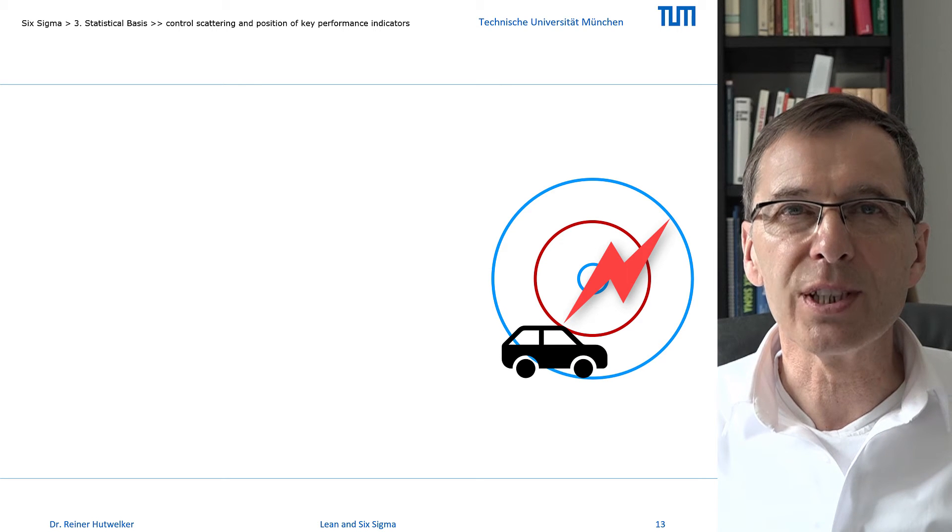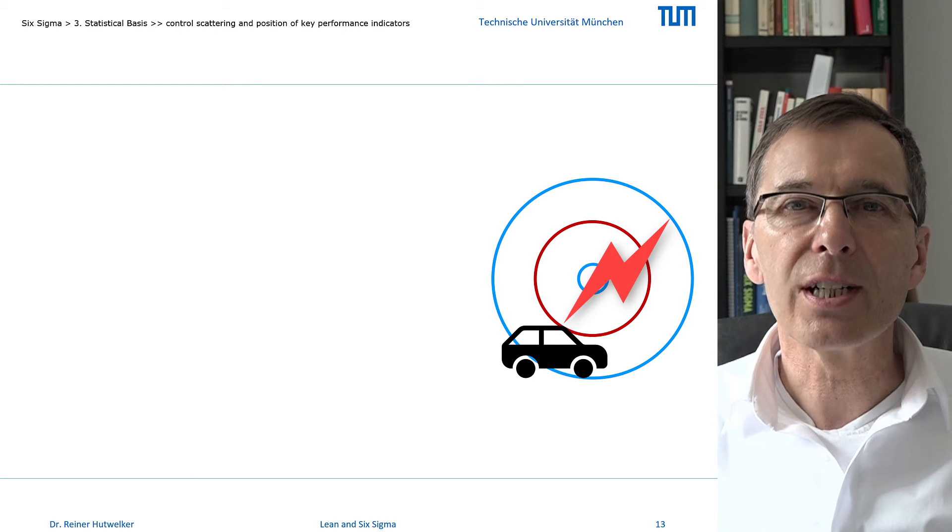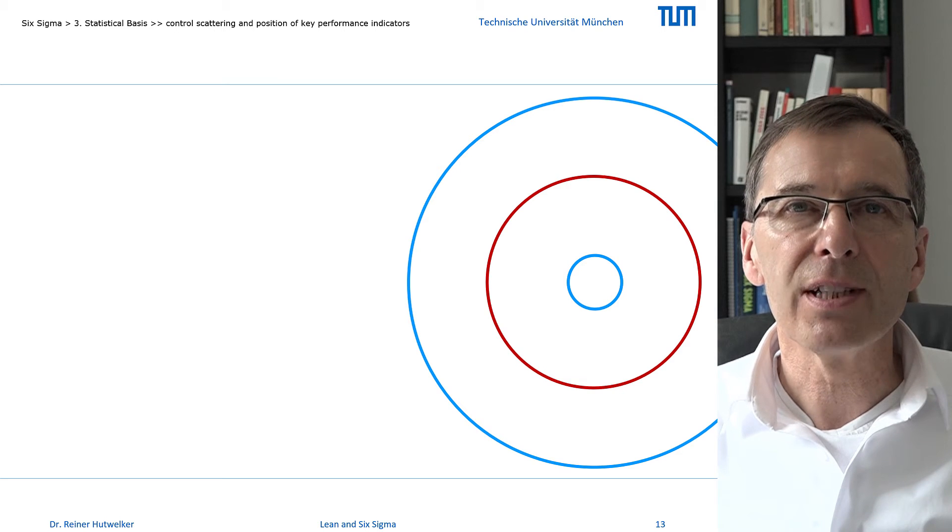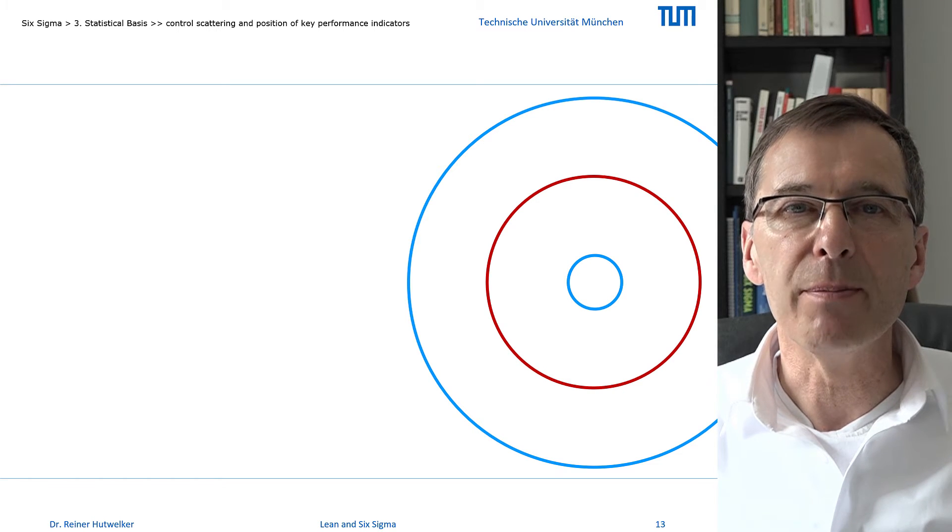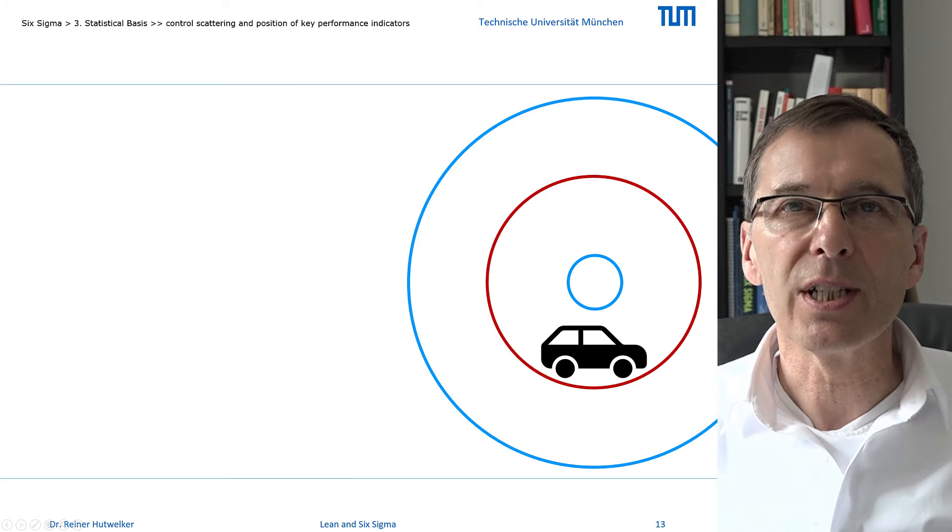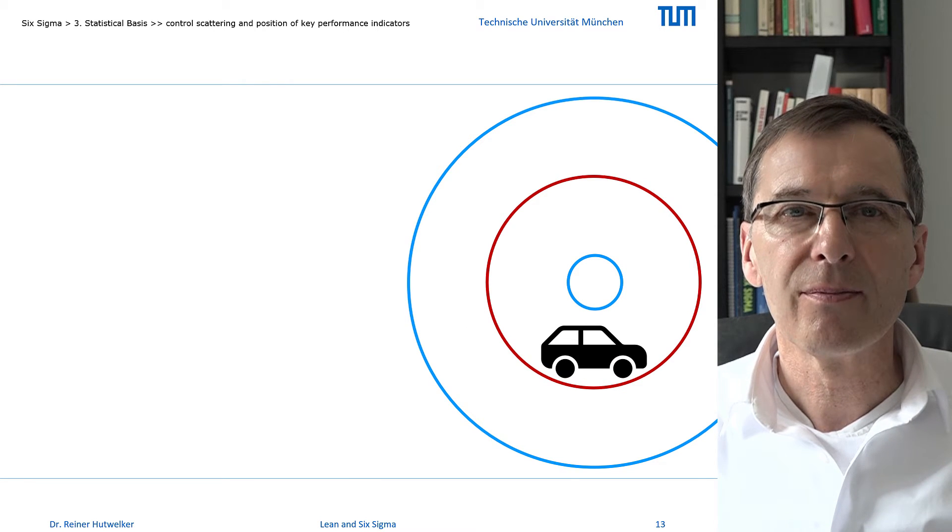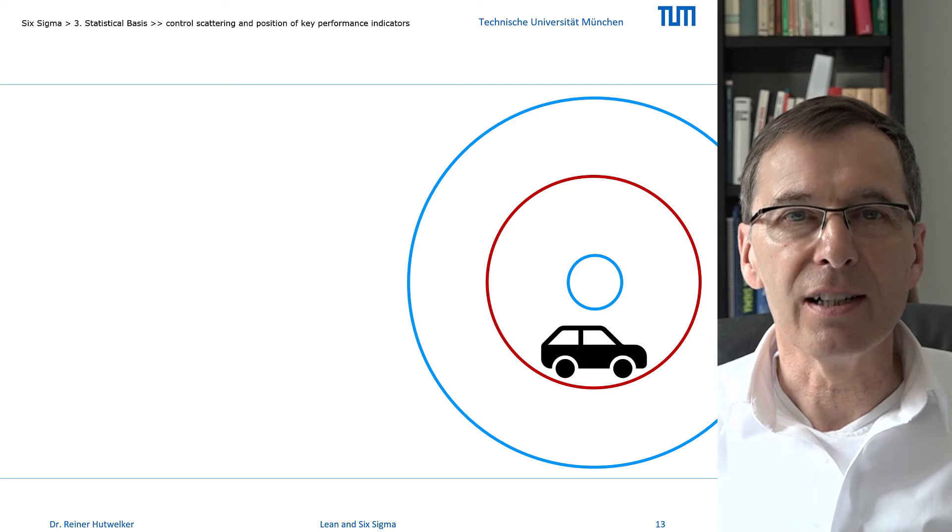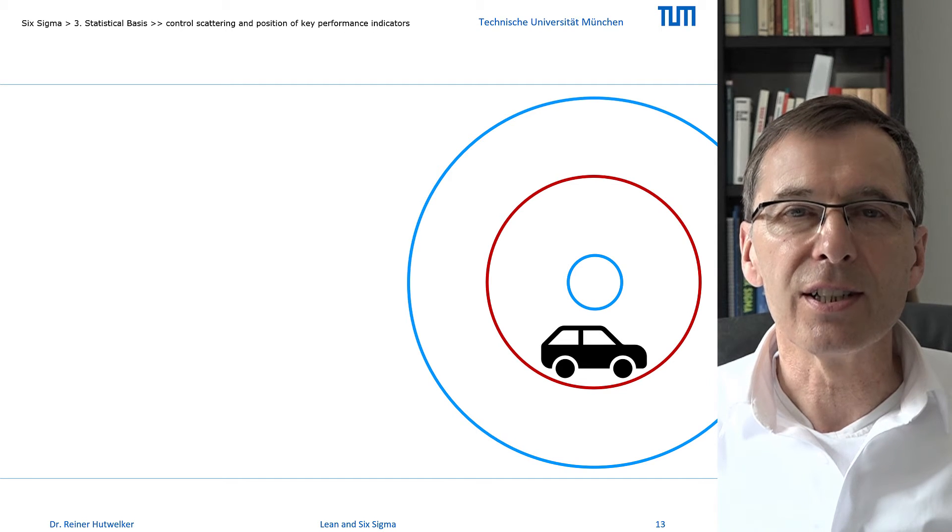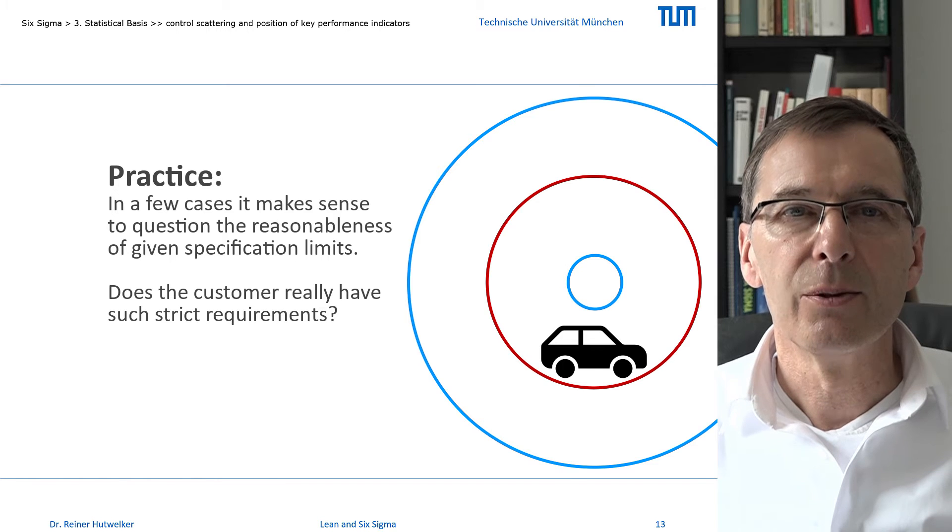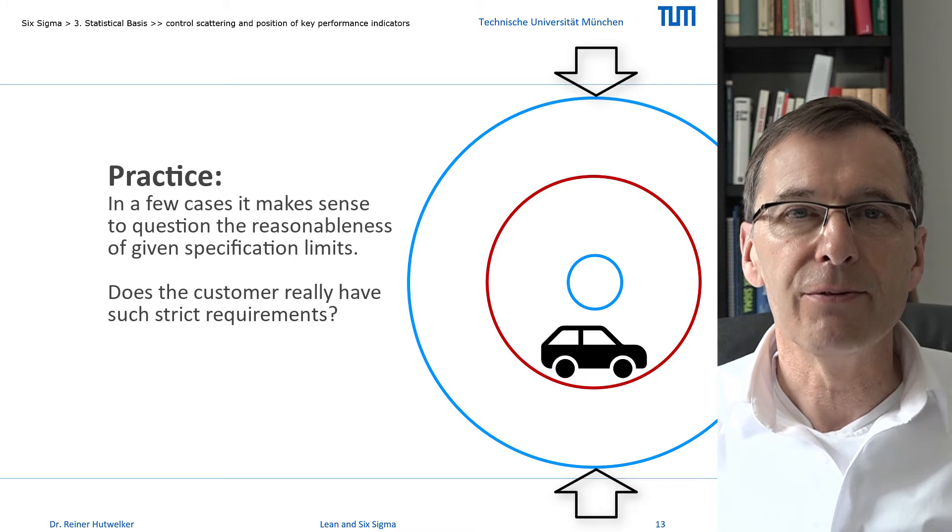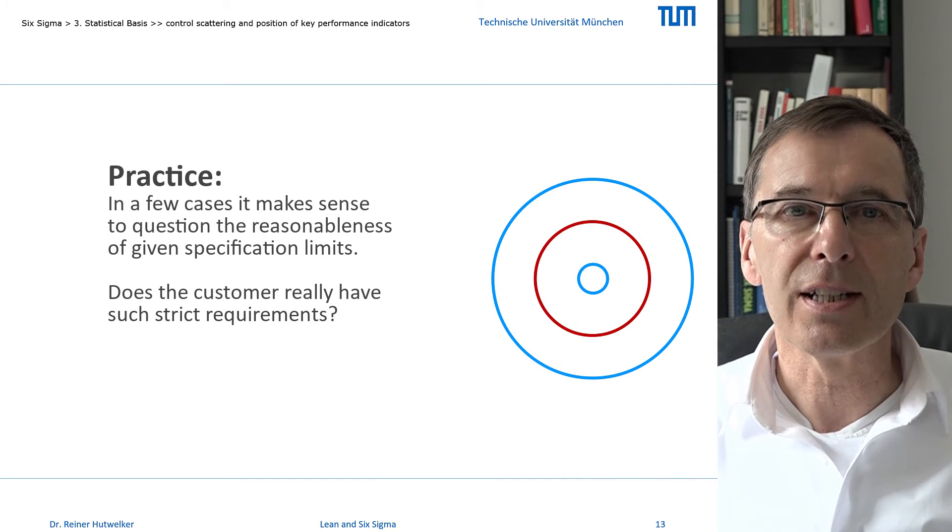There are two ways to increase process capability. If we convince our customer to widen the area of tolerated outputs, i.e. shift the specification limits away from the mean, then the capability of our process rises without changing the process. It's just because we got a broader garage without improving our capability to drive the car. This proposal is not entirely serious, but may be necessary in cases where different departments subtract individual fear buffers from the specification limits originally required by the customer.